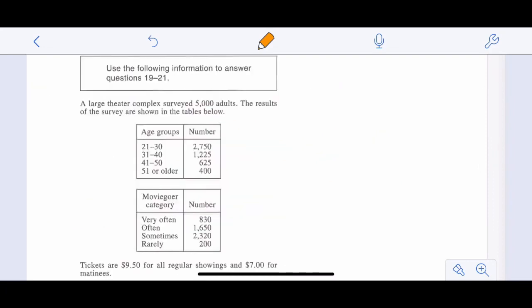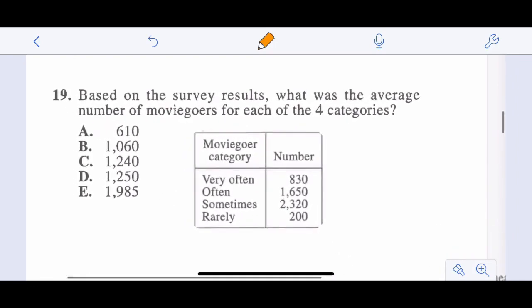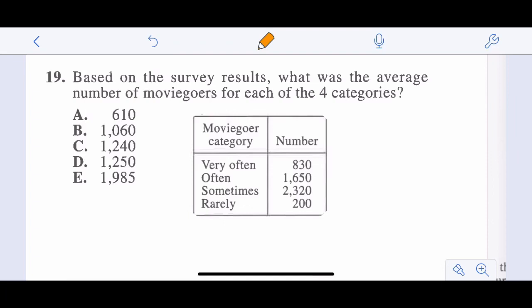Use the following information to answer questions 19 to 21. We'll use this information for the following three questions. Large theater complex surveyed 5,000 adults. Results are shown below. The age groups, number, moviegoer category. Tickets are $9.50 for regular shows and $7 for matinees. Based on the survey results, what was the average number of moviegoers for each of the four categories? So we want to add these numbers together. 830 plus 1650 plus 2320 plus 200 and we get 5,000. And then we divide that by 4. So 5,000 divided by 4 is 1,250. So our answer is D.